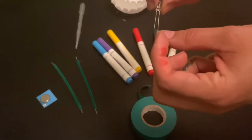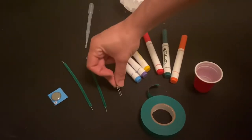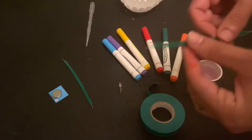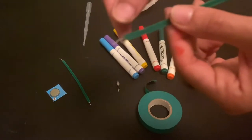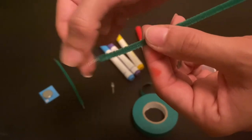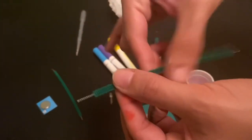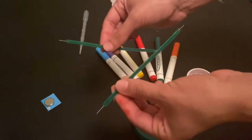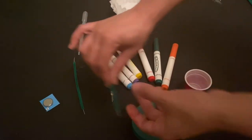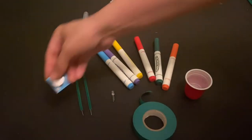We also have green pipe cleaners and we just plucked off on each end the fuzz to expose the wire to be a conductor for our electricity from the battery.